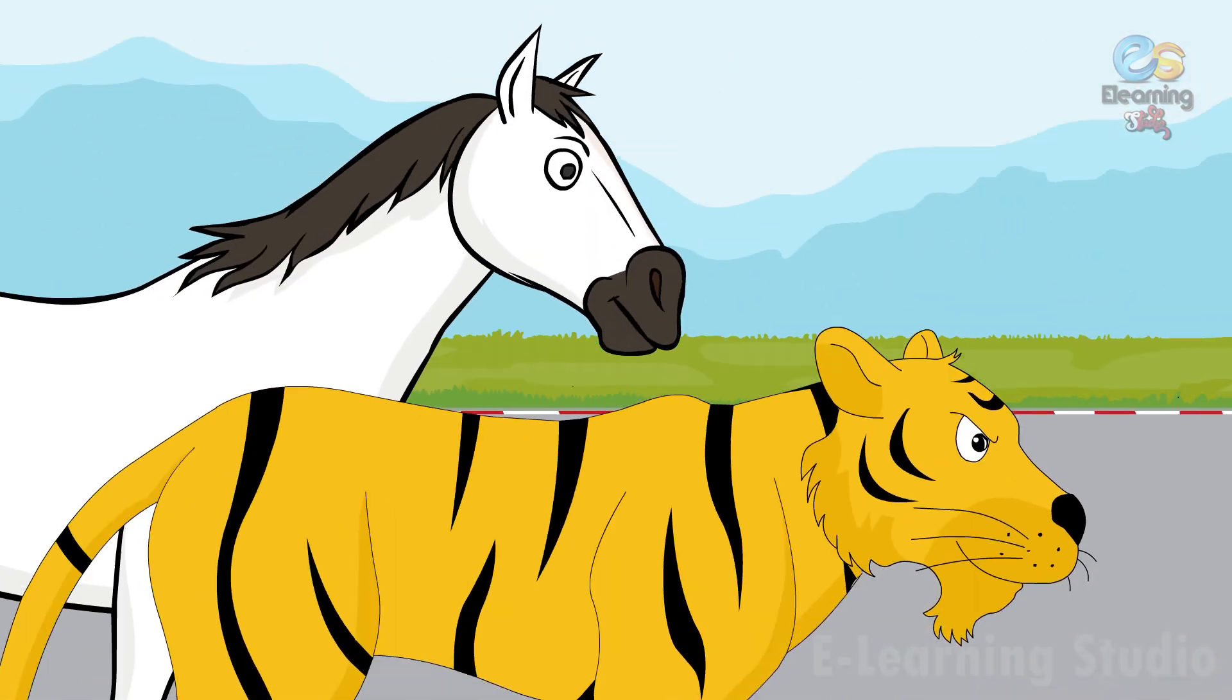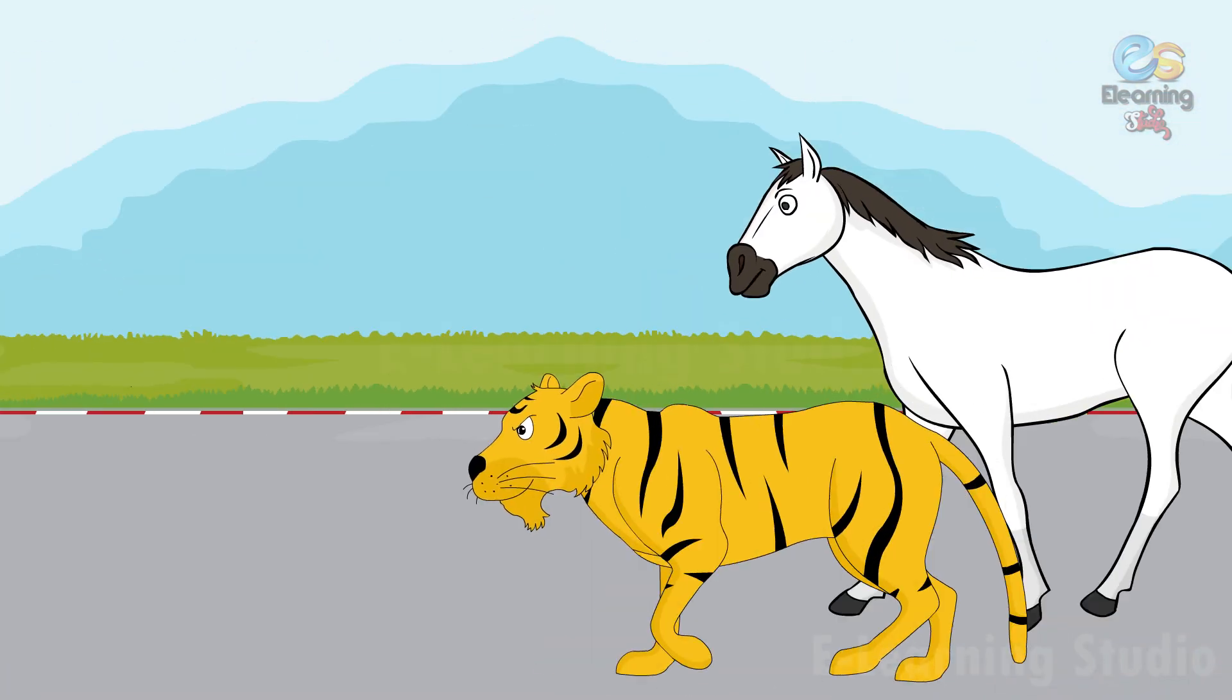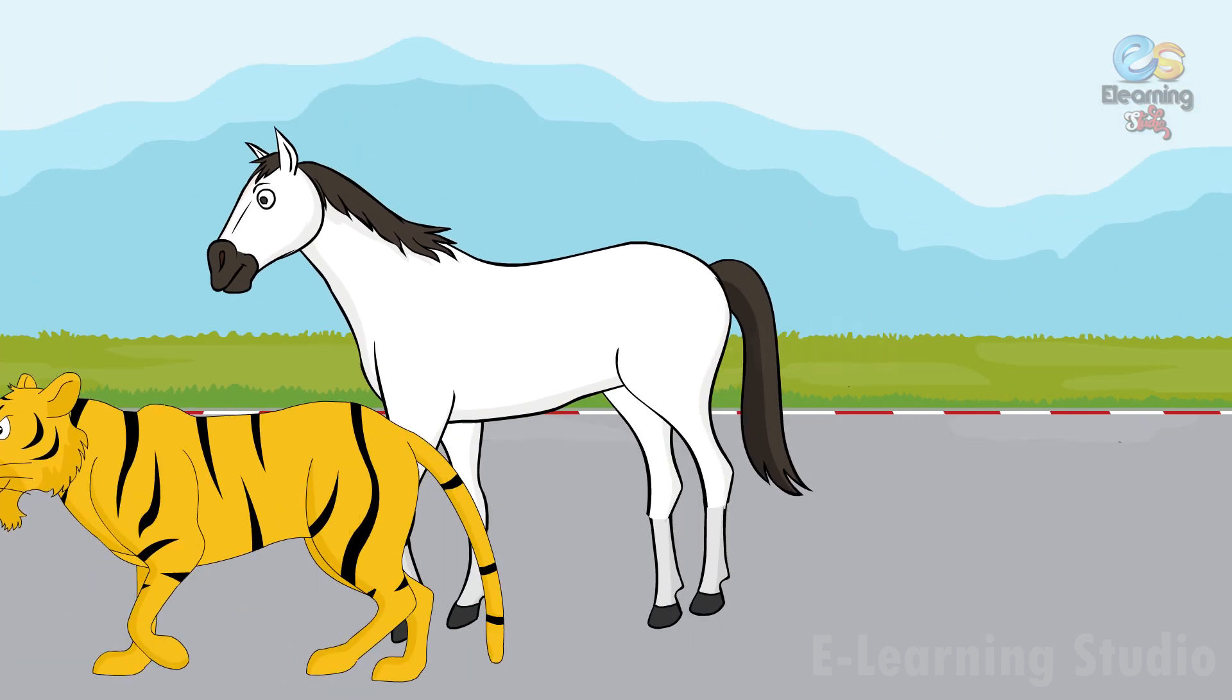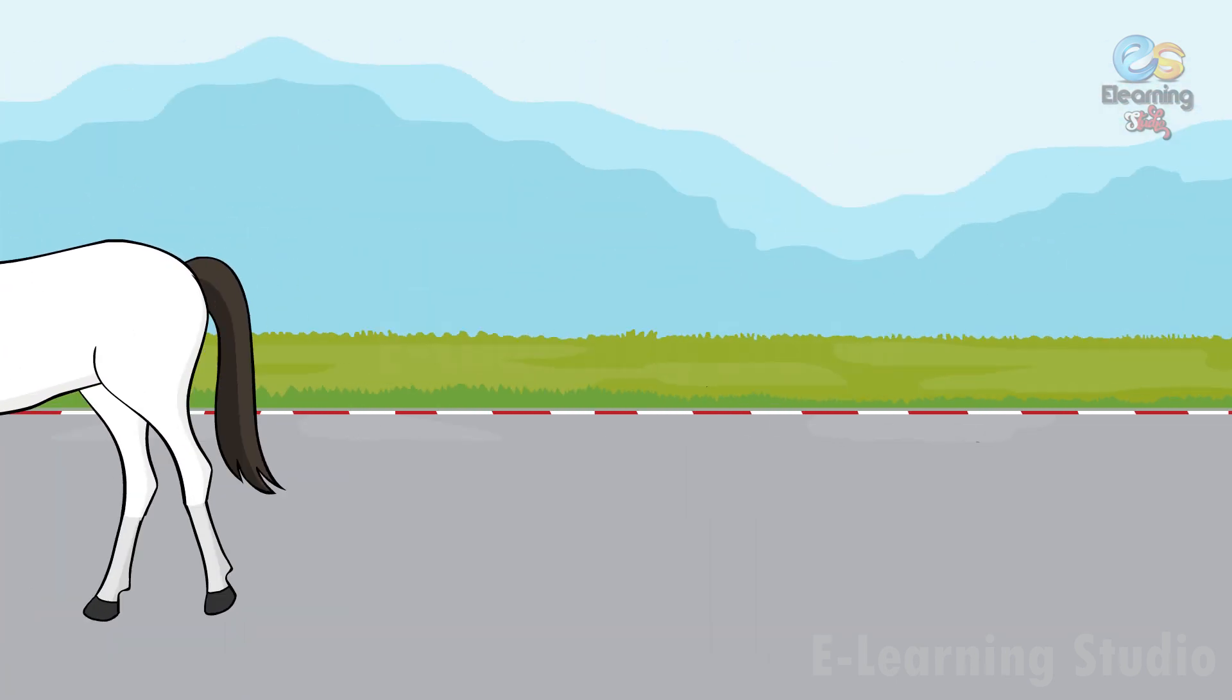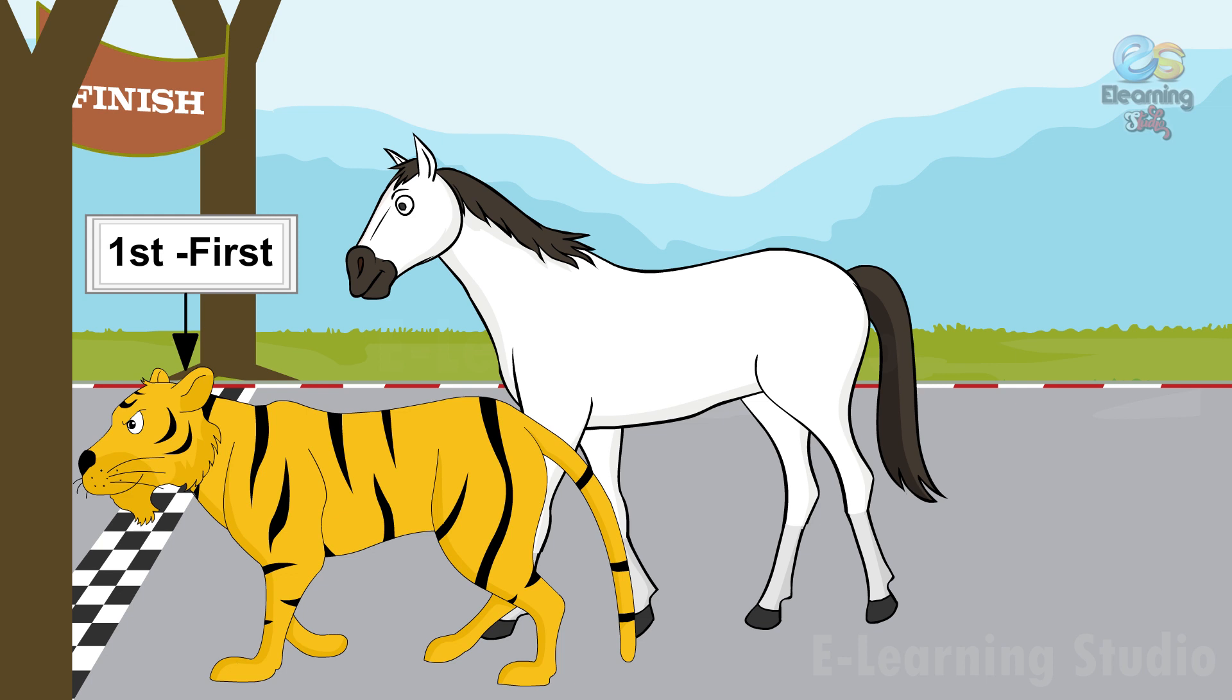Tiger and horse are running very fast. Tiger and horse complete their race and got the first and second position. Tiger is on first and horse is on second.